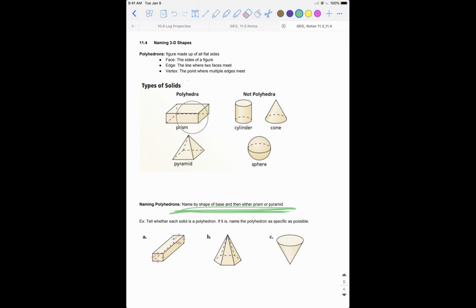So you've got to make sure you're thinking about what the shape of the base is. So if we go down here to these two, tell whether each is a polyhedron or not. And then if it is, name the polyhedron. As specific as possible means we should choose pyramid or prism, but then we should also name the base. So as specific means name by shape of the base, then whether it's either a prism or a pyramid.